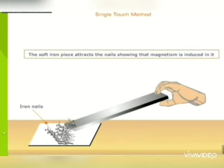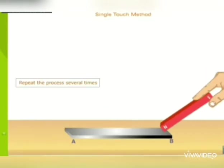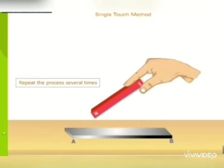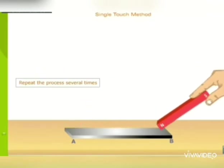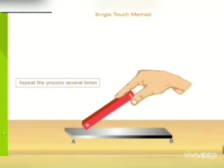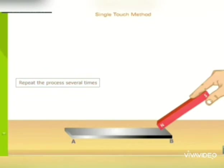The starting point acquires the same pole as the pole of magnet which was moved over it. We used north pole of magnet to drag. Thus, end A will acquire north pole.